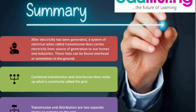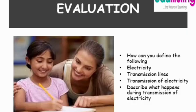Combined transmission and distribution lines is commonly called the grid. Transmission and distribution are two separate stages or systems on the grid. We have come to the end of this lesson.